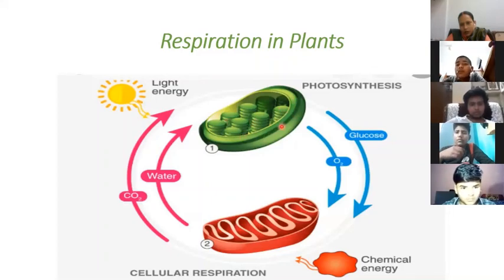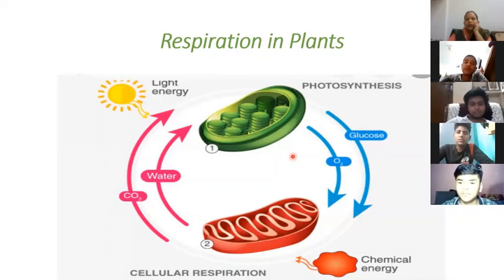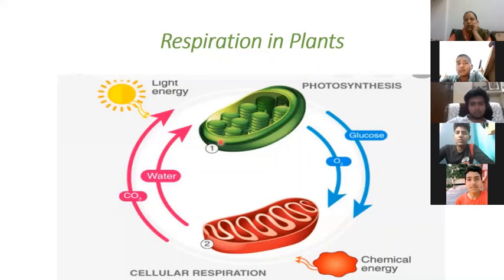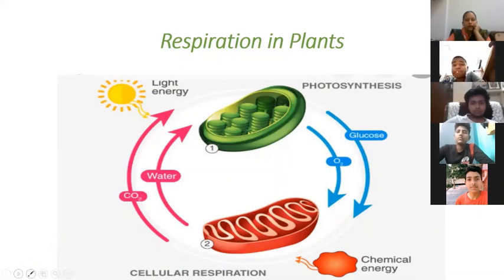The green organelle is the chloroplast, which carries out photosynthesis. The red organelle is the mitochondria. In plant respiration, chloroplasts use carbon dioxide and water for photosynthesis, releasing oxygen and glucose. Mitochondria then use that oxygen and glucose for respiration. Photosynthesis is a daytime process, while mitochondria carry out respiration full time.